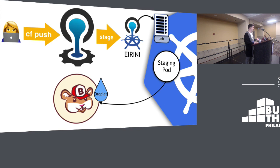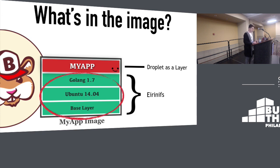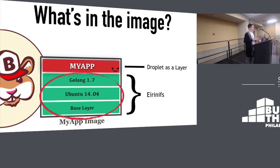What's really in the image? We use the droplet - your app - as a single layer of the image. The rest of the layer is a rootFS which we call IrineFS. IrineFS is just CF Linux FS plus another component called the launcher in Diego, which actually launches the app. So we're launching the application the exact same way.